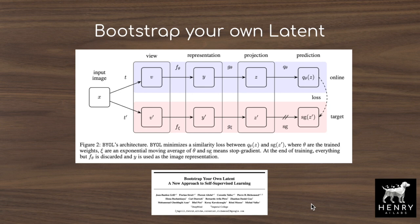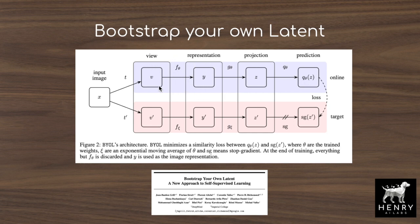Bootstrap Your Own Latent (BYOL) takes this to a pretty extreme point — and it's very surprising how well it works. You take an input image, apply two data augmentations forming two views (e.g., the image rotated 15 degrees vs. rotated -30 degrees with a translated color histogram). One view goes through the online network f_θ, and the other through the target network f_ξ, which is the exponential moving average of the online network. The online network must make its prediction consistent with this momentum target network, whose gradients are stopped.